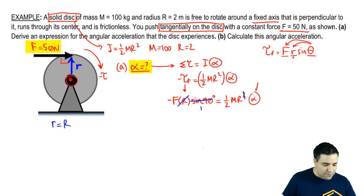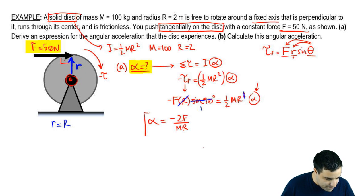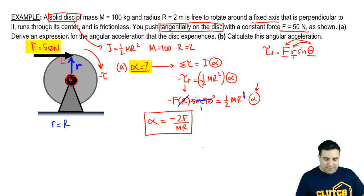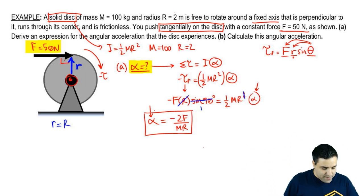I'm solving for alpha. I'm going to move everything to the other side so alpha is by itself. So I'm going to get negative 2F divided by MR. That's going to be our alpha. Notice I'm getting a negative acceleration. It should make sense. It's going this way. So the acceleration should be negative. So this is part A.